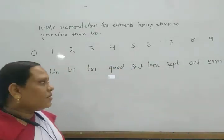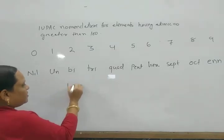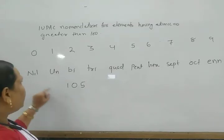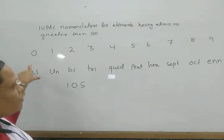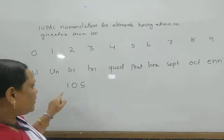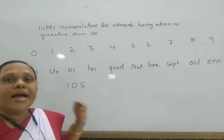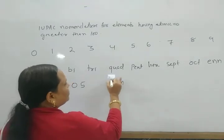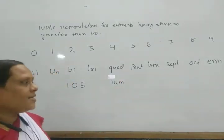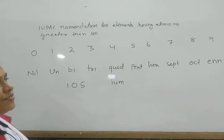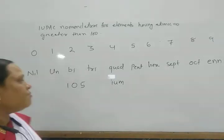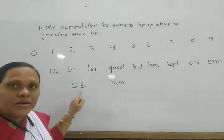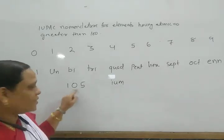After identifying the word roots for each digit of the atomic number, you write them side by side and add the suffix '-ium' at the end. For example, if an element has atomic number 105, you identify the word roots for 1, 0, and 5.